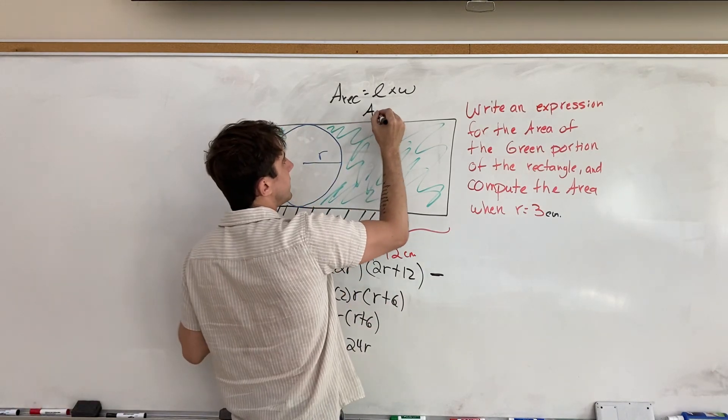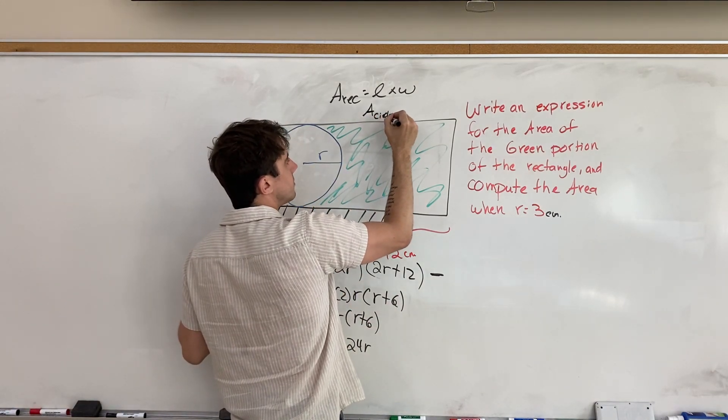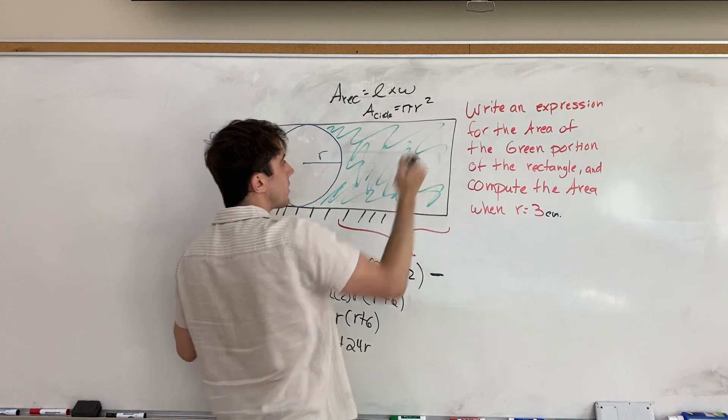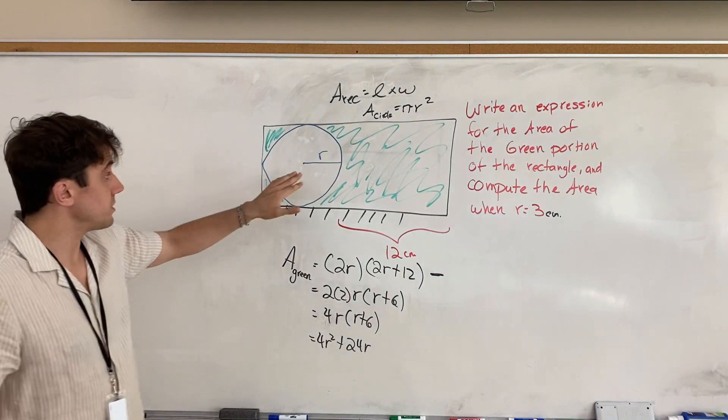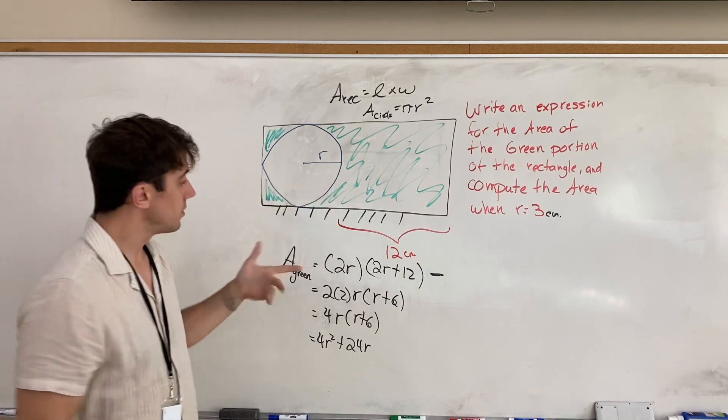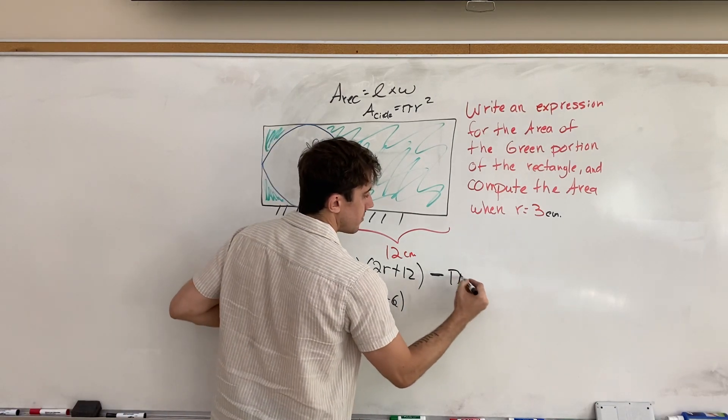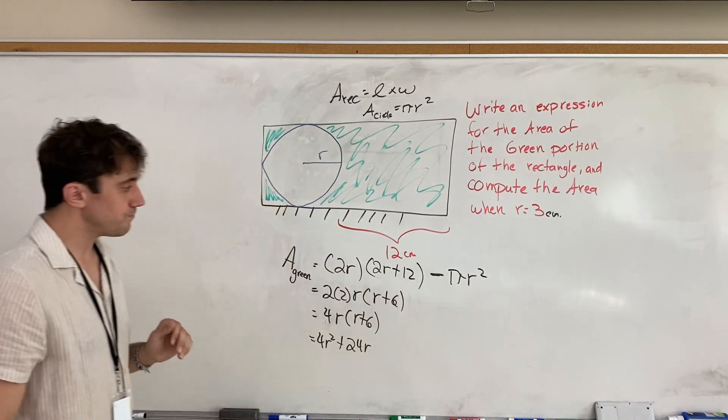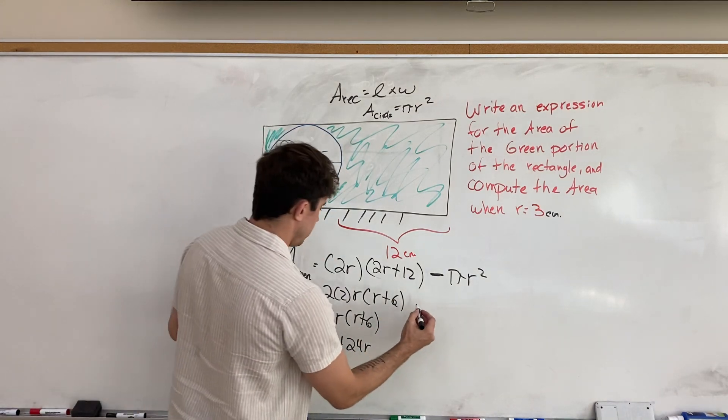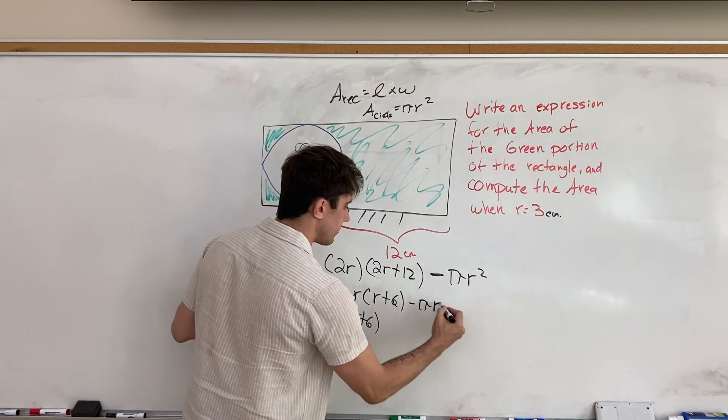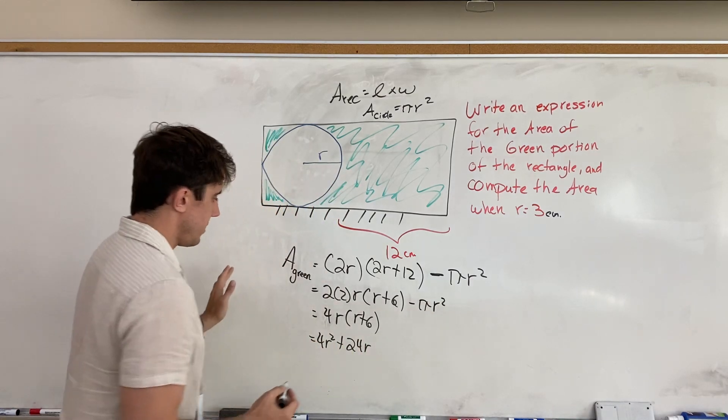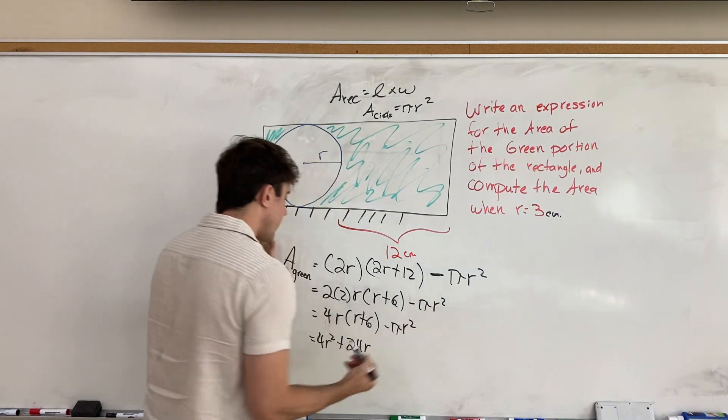So we're going to subtract the area of the circle. And the area of the circle, you'll remember, is pi r squared. And so, since we simply have the radius as r, we're just going to be subtracting pi r squared.